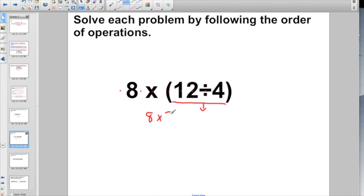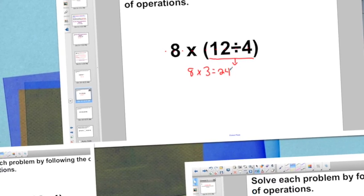12 divided by 4—hey, that's 3. So 8 times 3, that's going to give me 24. I highly recommend taking the extra 5 seconds and just putting it all down in one extra line like this.